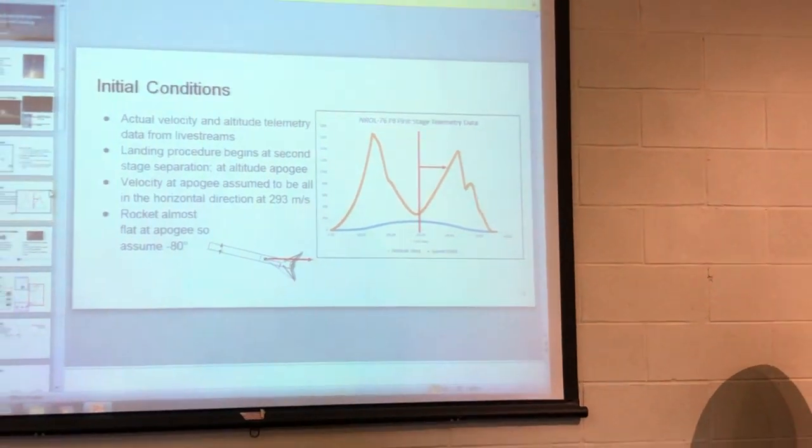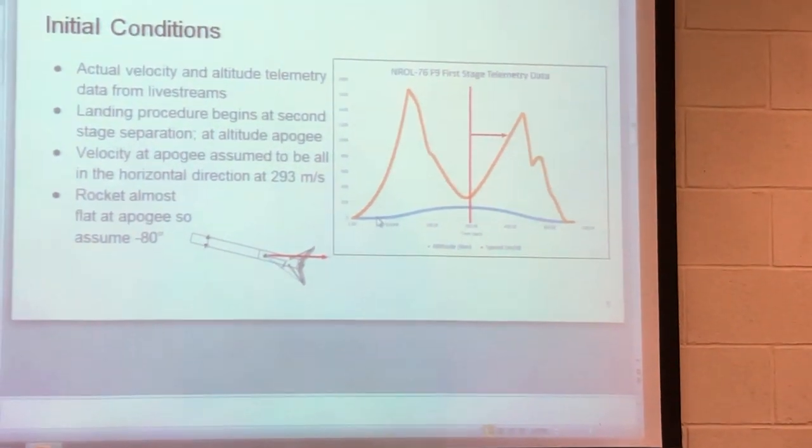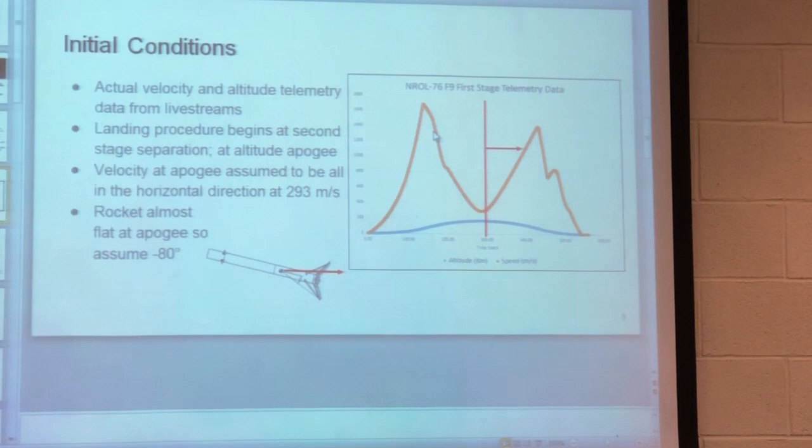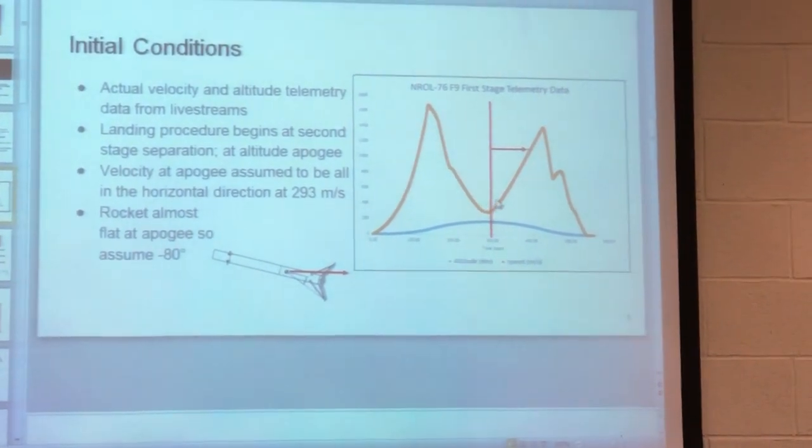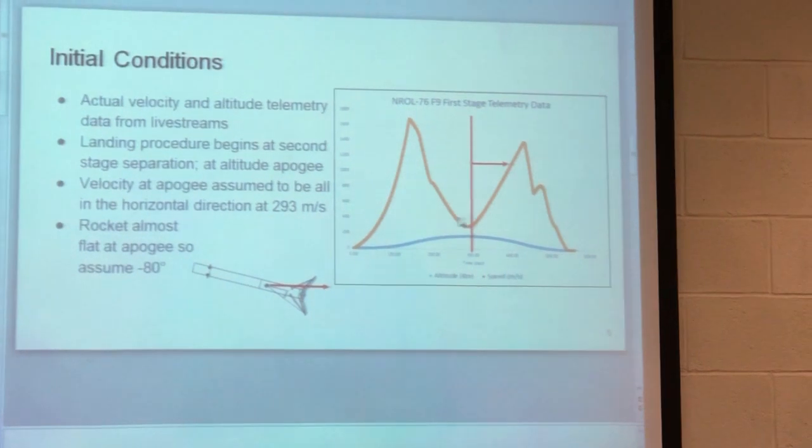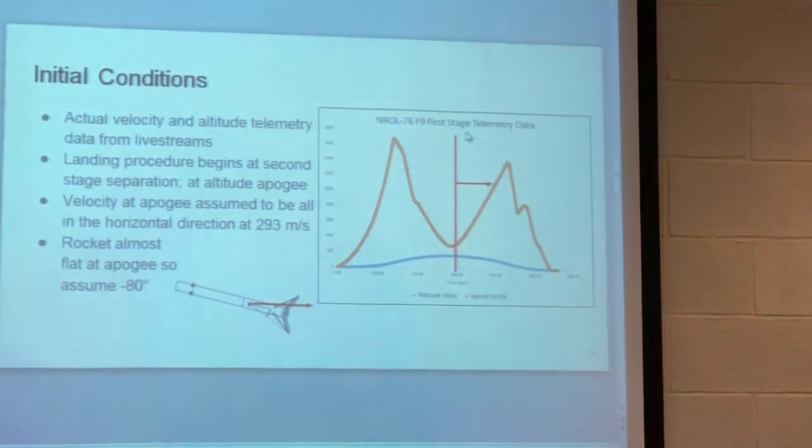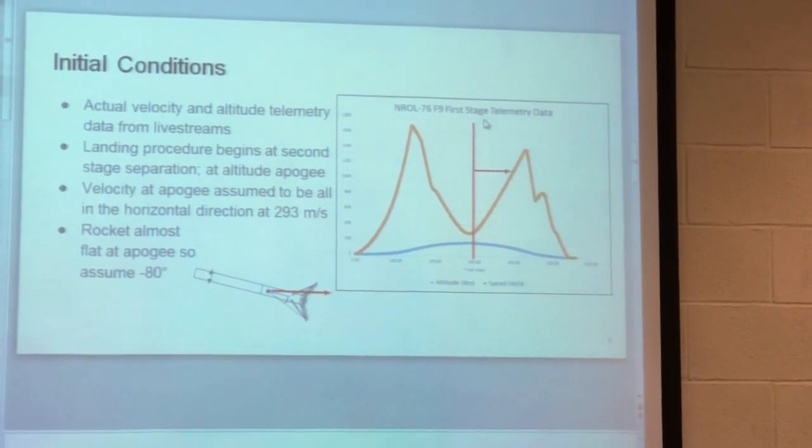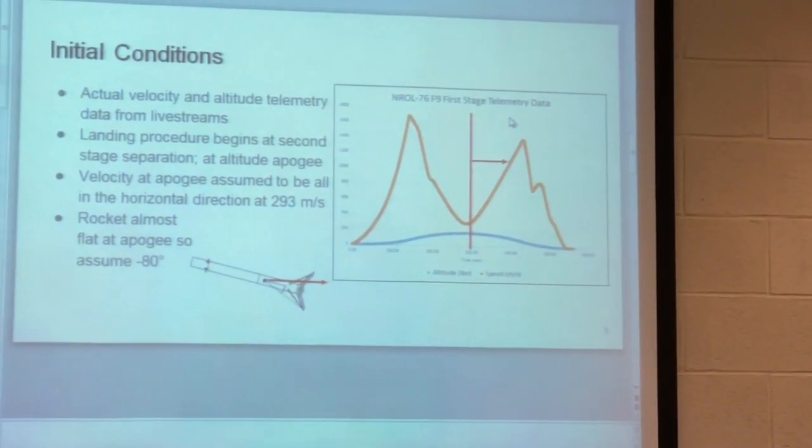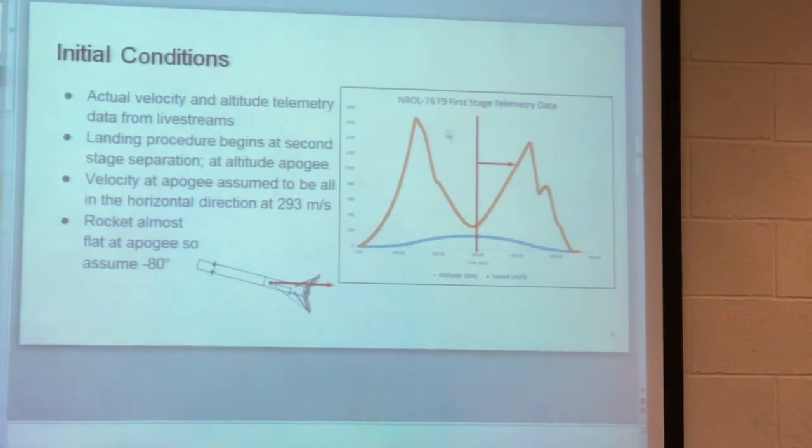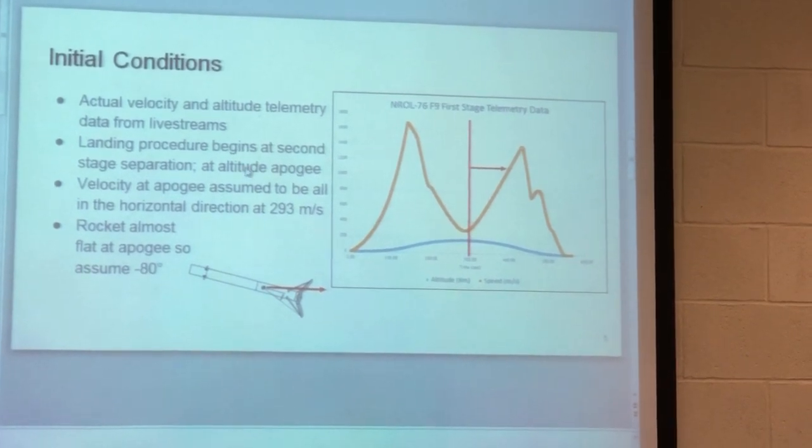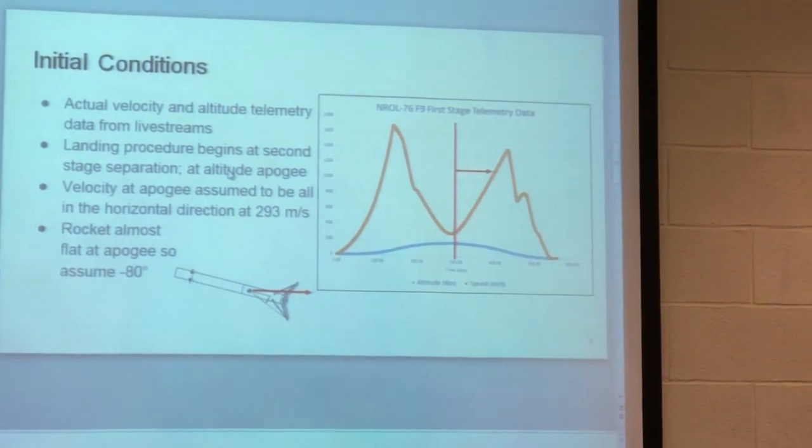In order to get the initial conditions I found some data online. This orange curve represents the velocity of the whole first stage trajectory from launch to landing. The part that I'm interested in is really the part after the second stage detaches, which is when the velocity is in its valley right here. I can assume that basically all vertical velocity is zero, cancelled out at that point, and all the velocity I see here is in the horizontal direction. That gave me my initial velocity of 293 meters per second. Also the altitude was about 166 kilometers up vertically, and the angle was at negative 80 degrees. It's almost flat.